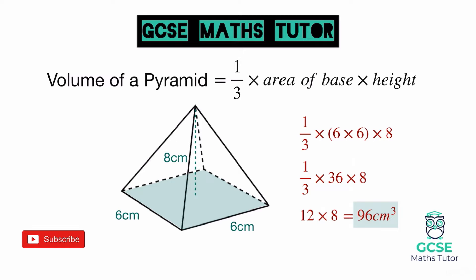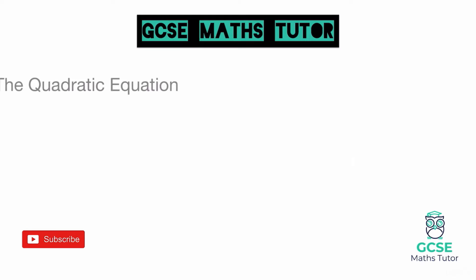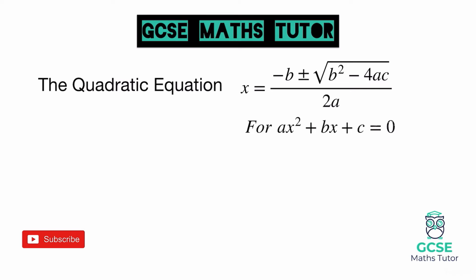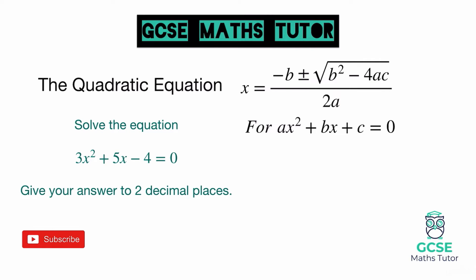The next formula is the quadratic equation, which is the nastiest looking of all of them. It is: x equals negative b plus or minus the square root of b squared minus 4ac, all over 2a. This applies when we have a quadratic in the form ax squared plus bx plus c equals zero. For a basic example: solve the equation 3x squared plus 5x minus 4 equals zero, giving your answer to two decimal places.